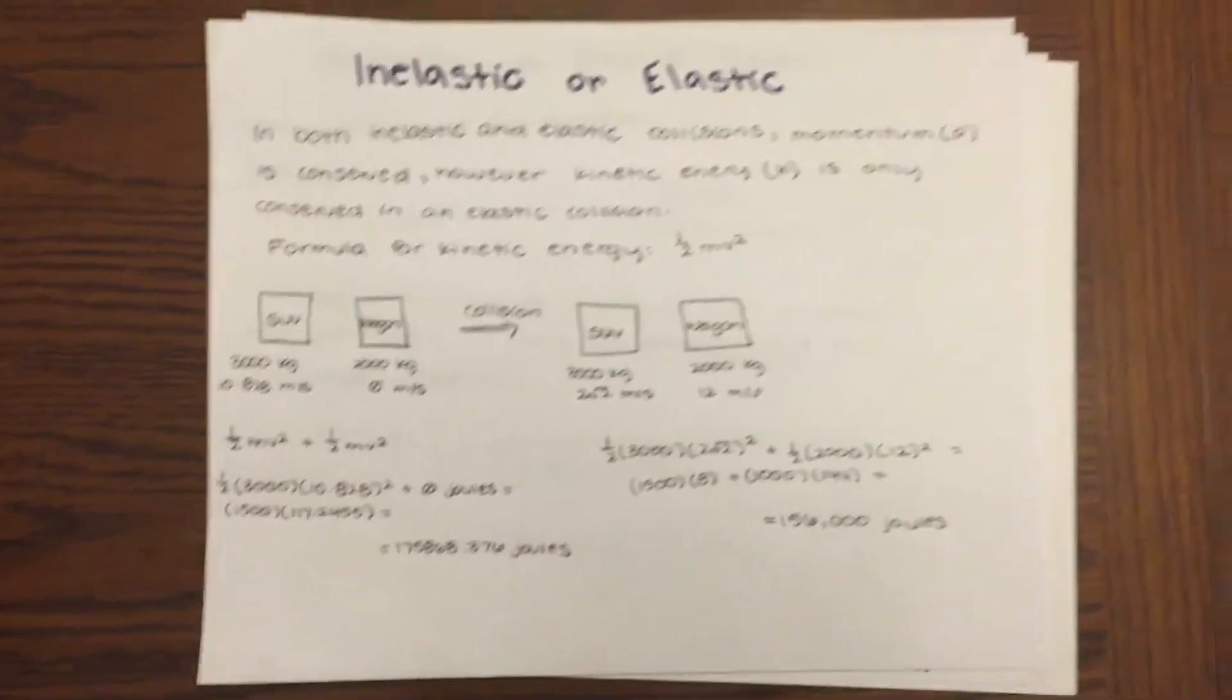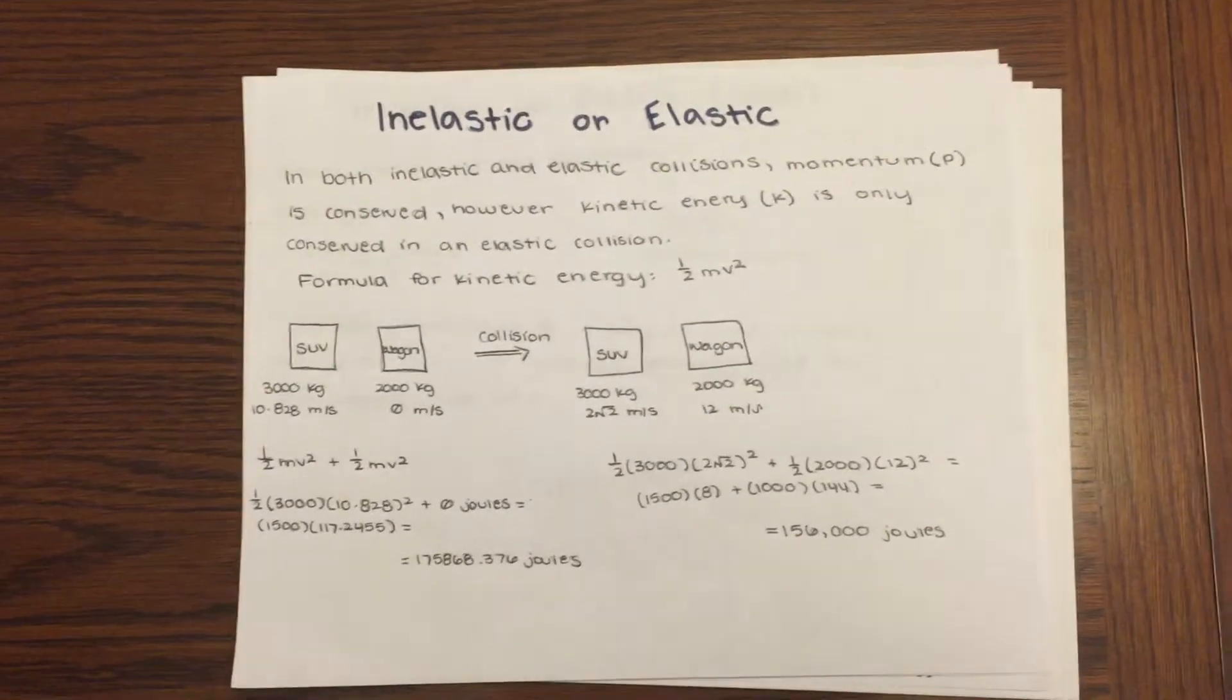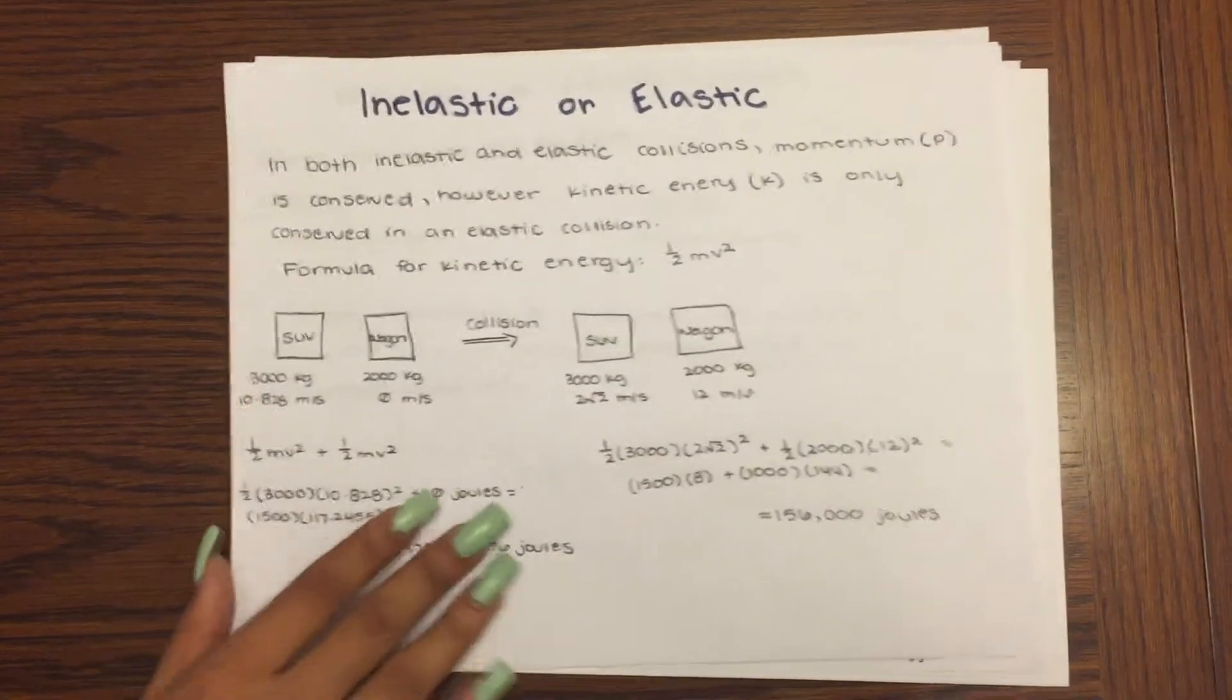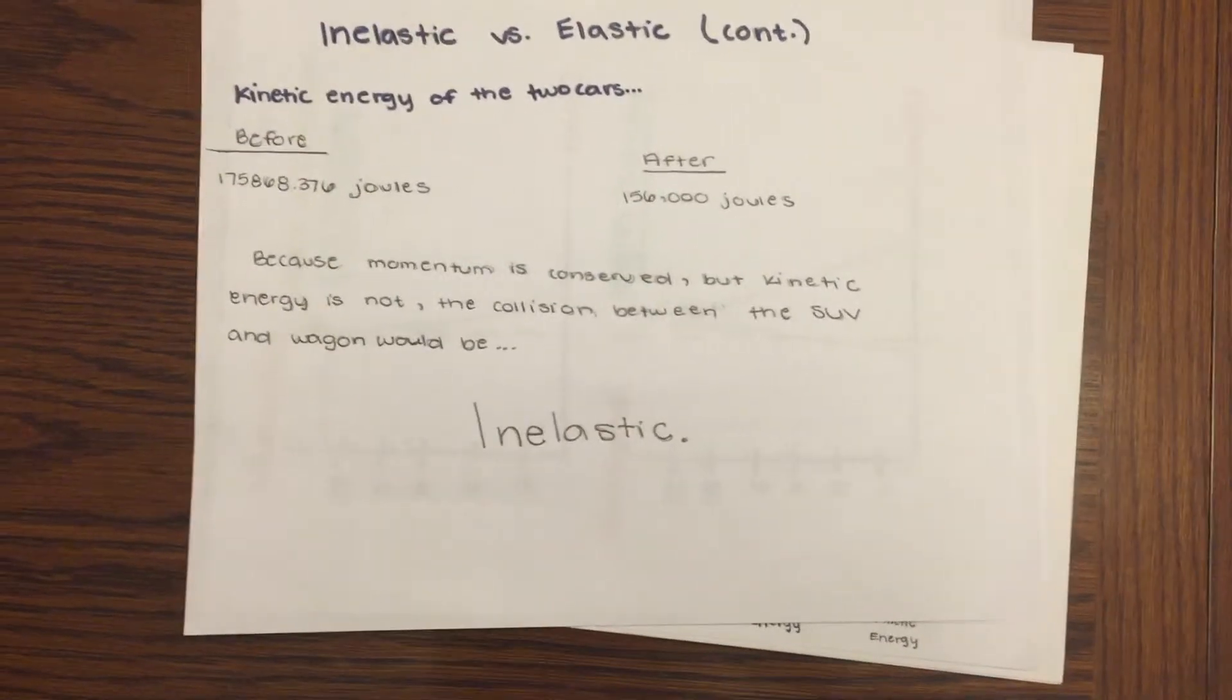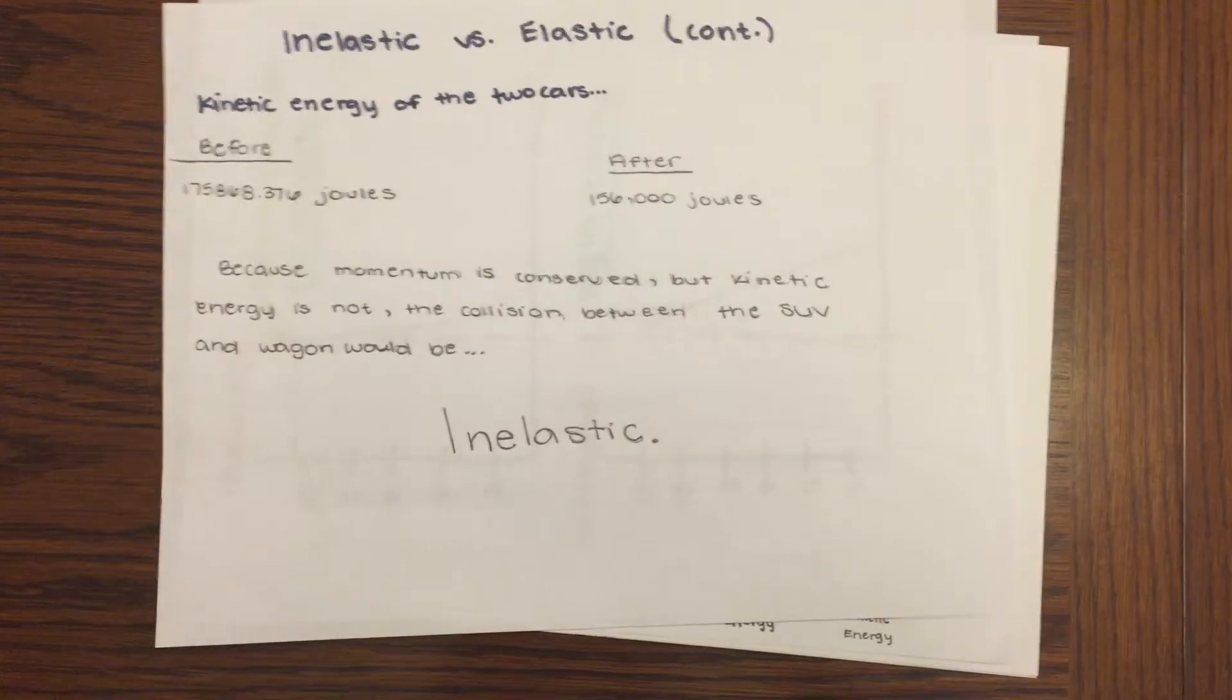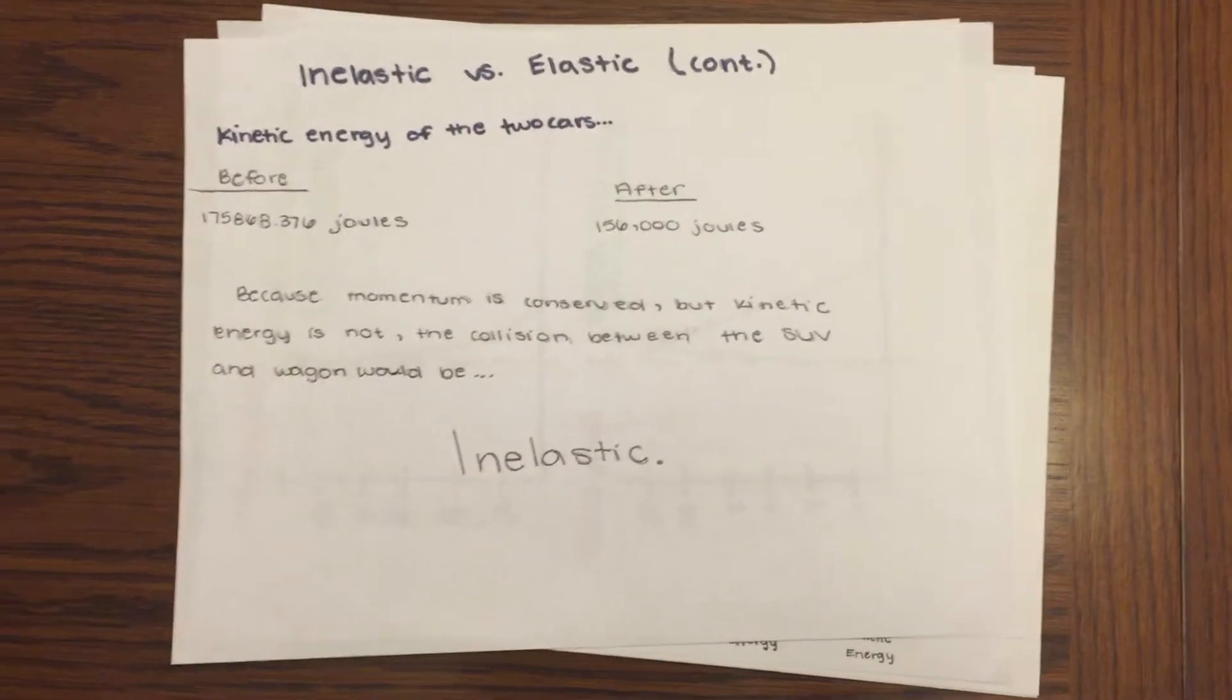Using the equation 1/2 mv squared, kinetic energy of both cars was calculated before and after. The results show that kinetic energy was not alike, therefore inelastic. Energy was lost to friction and heat.